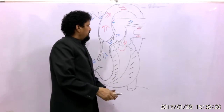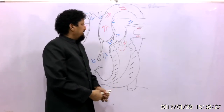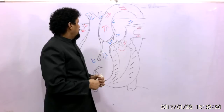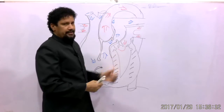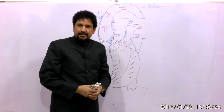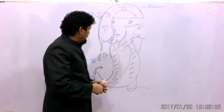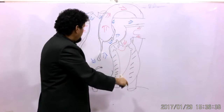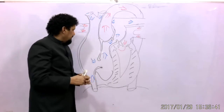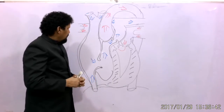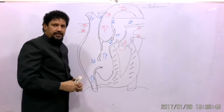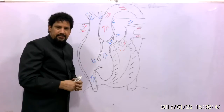The left pulmonary artery is anterior to the aorta and the right one is behind the ascending aorta. So this is the anatomy of the heart, and in this lecture I will talk about the internal anatomy of the right atrium.